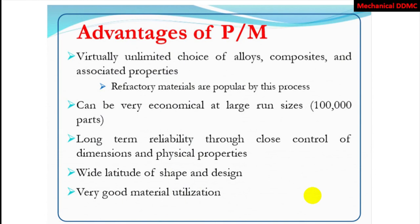There is virtually unlimited scope for alloys, composites, and associated properties. Refractory materials are best processed by this technique since they cannot be heated to the melting point. The process can be very economical at large production runs. It offers long-term reliability through close control of dimensions and physical properties, and wide latitude of shape and design — depending upon the compaction size of the machine, we can make parts bigger and bigger. Very good metal utilization is achieved.